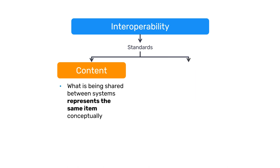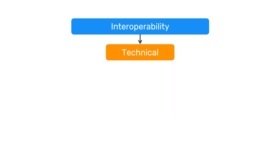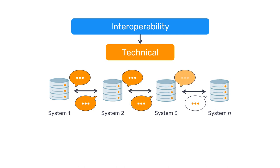The second level is technical. This involves the mechanisms and formats used to actually transmit the data from one system to the other. In simple words, technical integration ensures that all systems involved can speak to and hear each other, and that they use the same language.